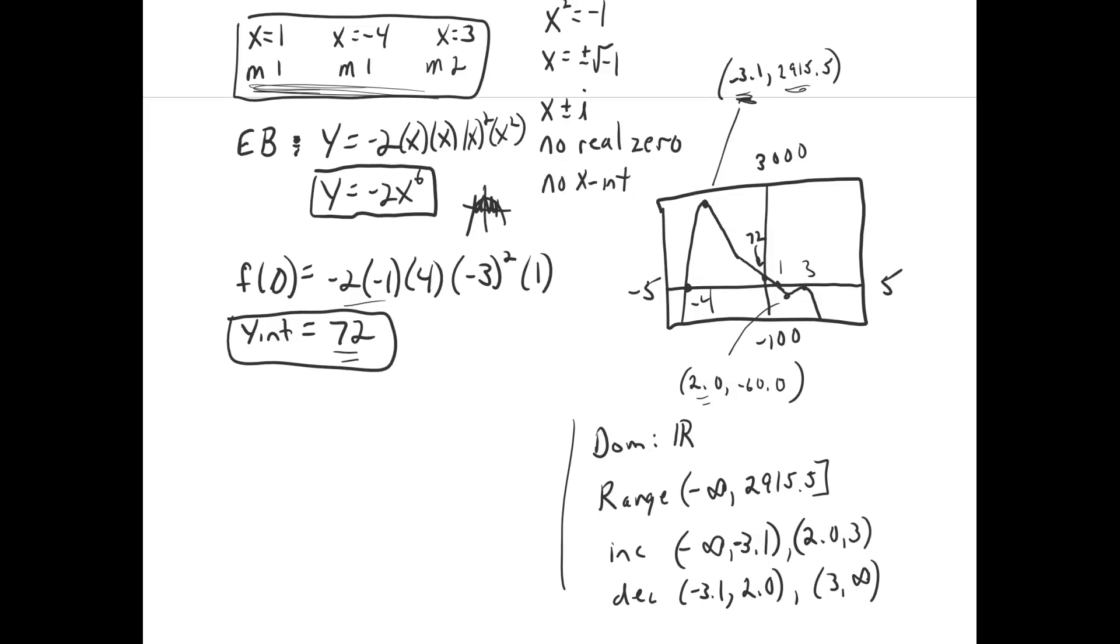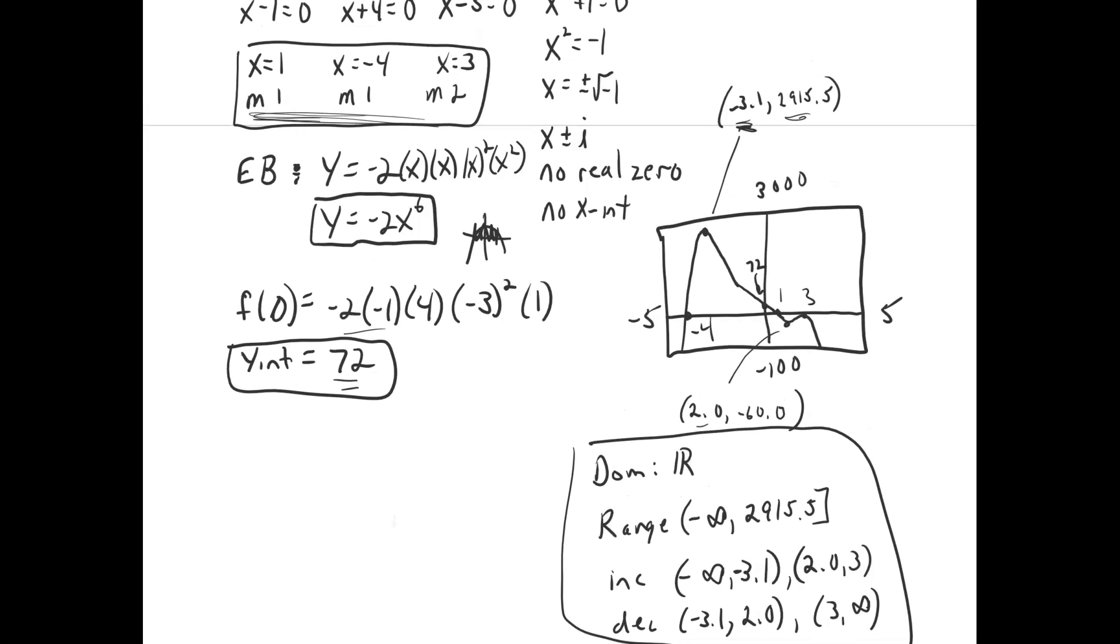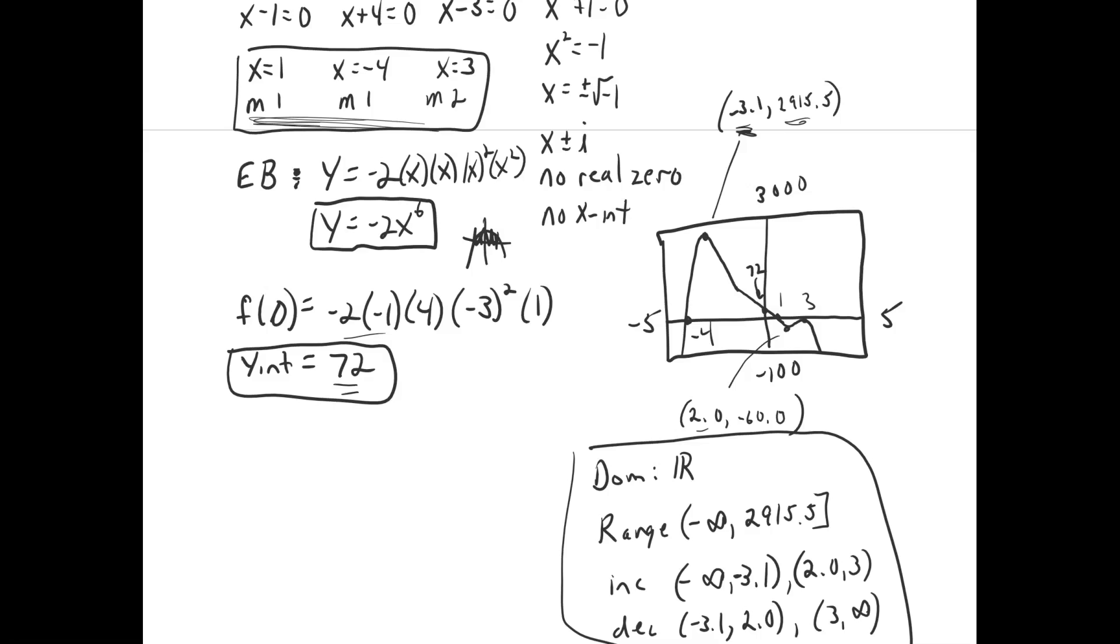And so that is the last part of our analysis. Of course, the graph is important. Our end behavior model, our y-intercept, and our x-intercepts along with their multiplicity. I hope you found this helpful.